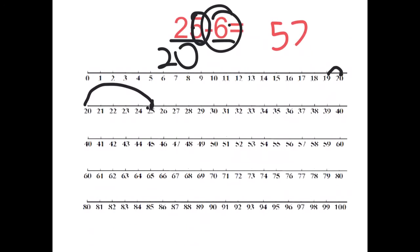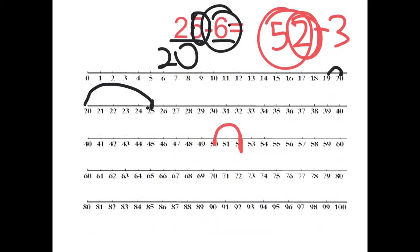What if I did 52 take away 3? We start from 52 and we need to take away 3. The first thing we do is take 52 back to the nearest 10, which is 50. How many do we need to go back? 2. So we jump back 2. We've gone back 2, but we need to go back 3, so how many more do we need to go back? Well, if we do 3 take away 2, we realise we need to go back 1 more. So we go back 1 more, and the answer is 49.